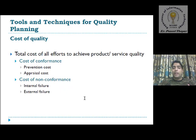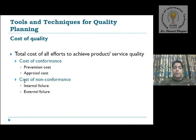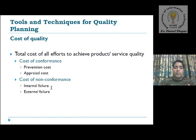One more parameter is cost of quality — the total cost of all efforts to achieve product or service quality. This includes cost of conformance, such as prevention cost and appraisal cost — what is needed to prevent the system from bugs and for appraisal of the system. Cost of quality also includes non-conformance, like internal failure or external failure. Failures are not predictable; they are suddenly generated. This is the cost of quality parameter.